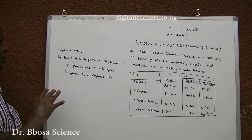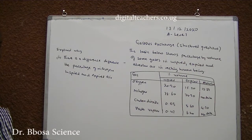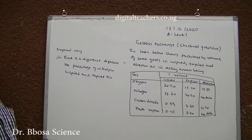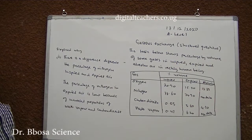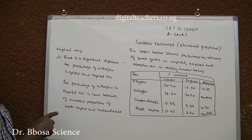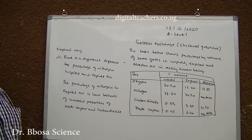2. Explain why there is a difference between the percentage of nitrogen in inspired and expired air. You can pause and answer. The percentage of nitrogen in expired air is lower because of increased proportions of water vapor and carbon dioxide.